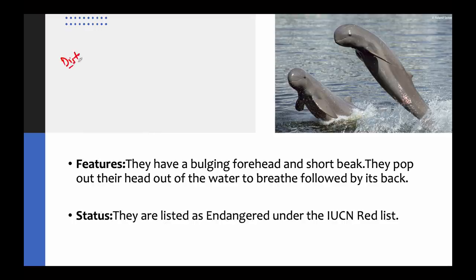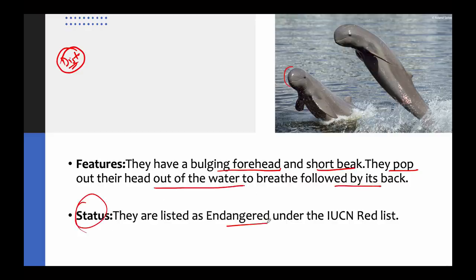Regarding their distribution, they have been found from the Philippines into the northeastern part of India and around the waters of the Indo-Pacific. They tend to stick to shallow water areas around the coast. They are one of the few species of dolphins that can survive in freshwater locations. Their features include a bulging forehead, a short beak, and they pop their head out of the water to breathe. Their IUCN status is Endangered. Diving is quite frequent — every 70 to 150 seconds they have to come up for air.